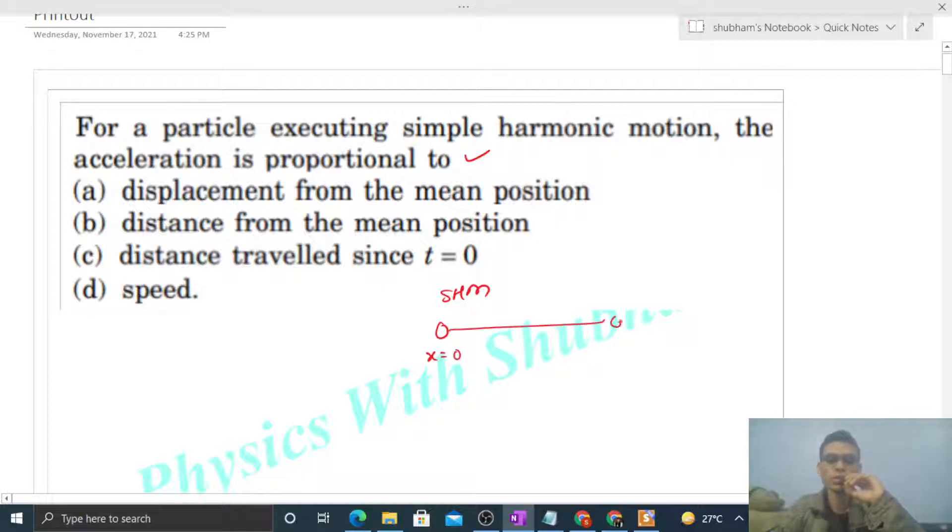x is equal to plus A and x is equal to minus A are the extreme positions. Now the equation for SHM will be simply A sin omega t. Let's say it starts from the mean position.